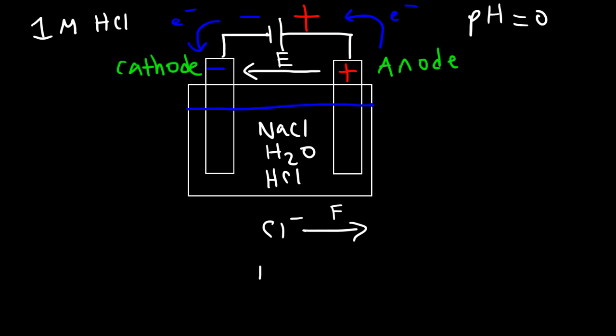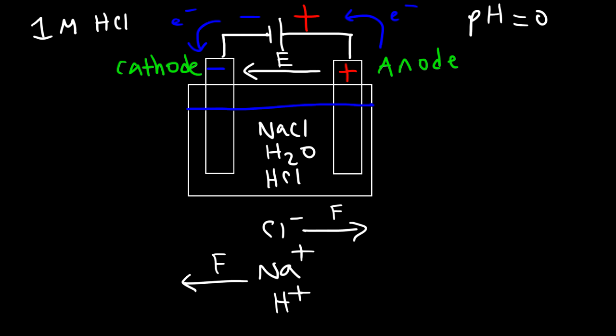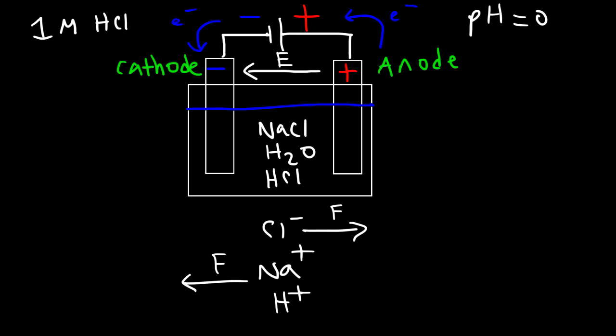The negatively charged ions like chloride will feel a force that accelerates them in a direction opposite to the electric field. The positive charges like the sodium ion or the hydrogen ion will feel a force that accelerates them in the direction of the electric field. So anions like chloride flow towards the anode, and cations like sodium and the hydrogen ion flow towards the cathode. Cations are ions with positive charges and anions are ions that contain a negative charge.